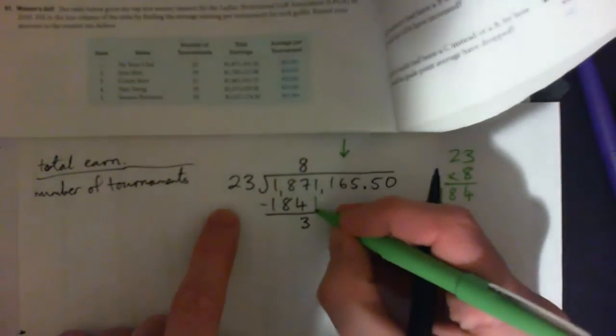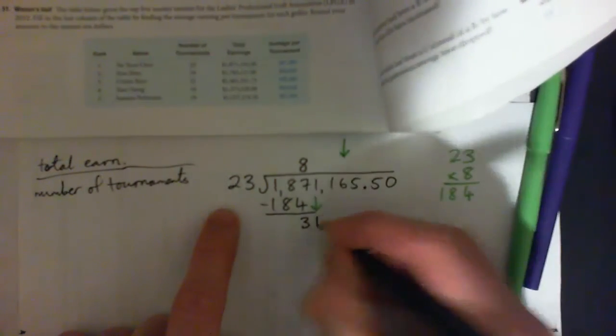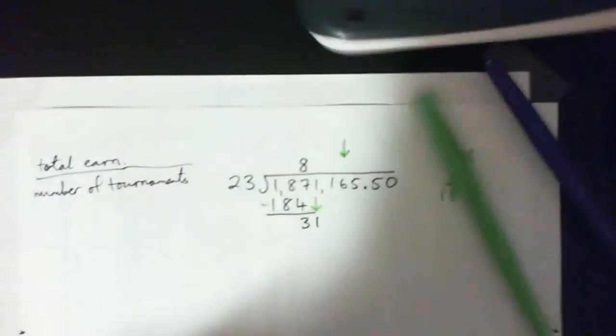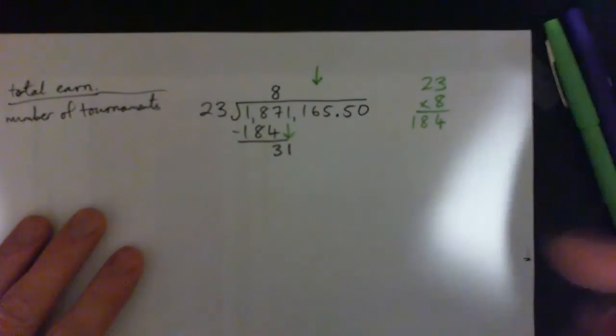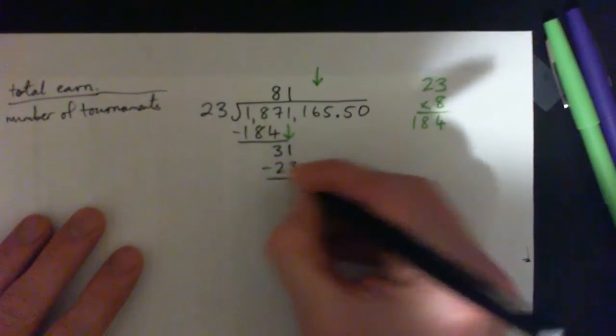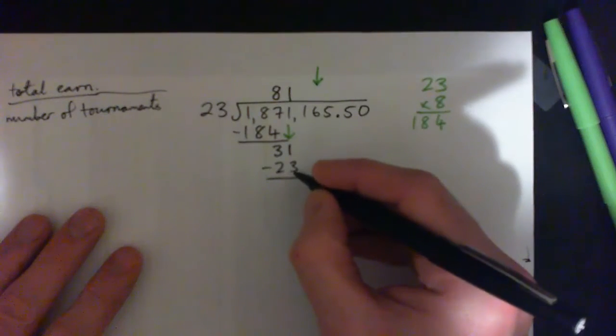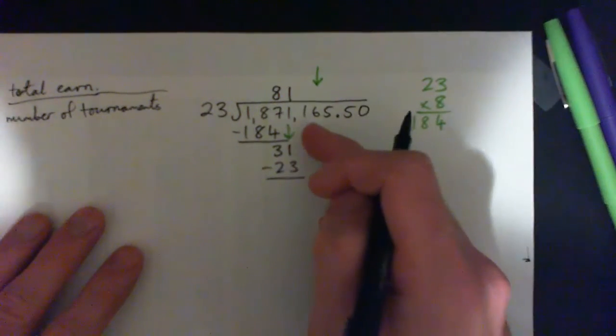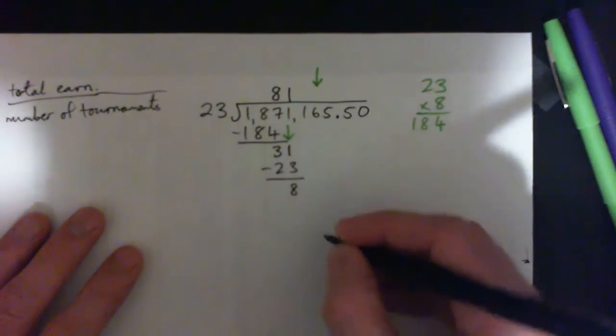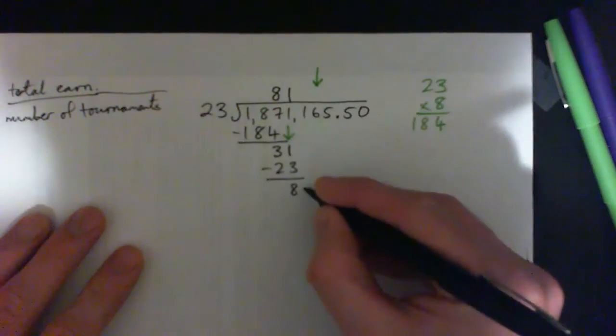And bring this one down here to get 31. 23 into 31 is just 1. 1 times 23 is 23. And subtract. 23 to get to 30 would be 7 and one more is 31. So that will subtract give 8. And then we bring the next number down. That's a 1.